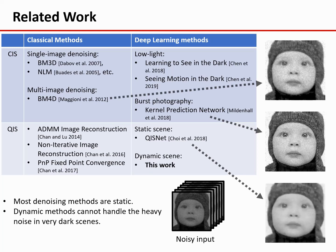There are also deep learning methods for QIS, but they are not designed for dynamic low-light scenes. If we apply a low-light denoising method, such as QISNet, to our problem, it will very likely yield blurry results. In short, the previous work can either solve the denoising problem when a scene is static or solve the aligning problem when the noise is mild. Imaging dynamic scenes with heavy noise remains an open problem.